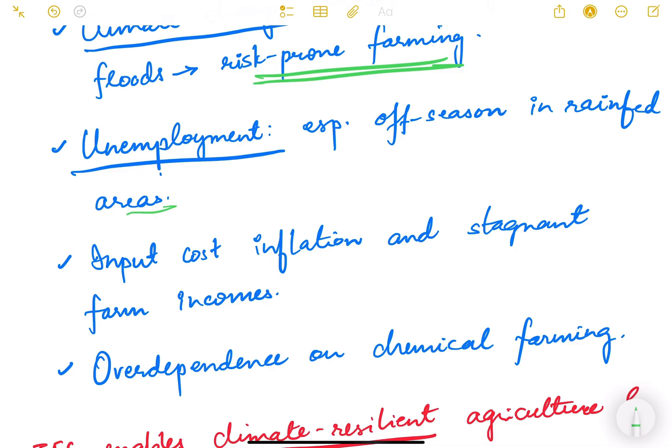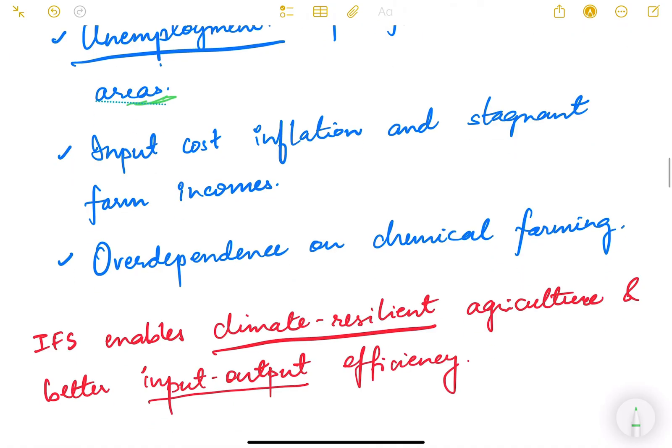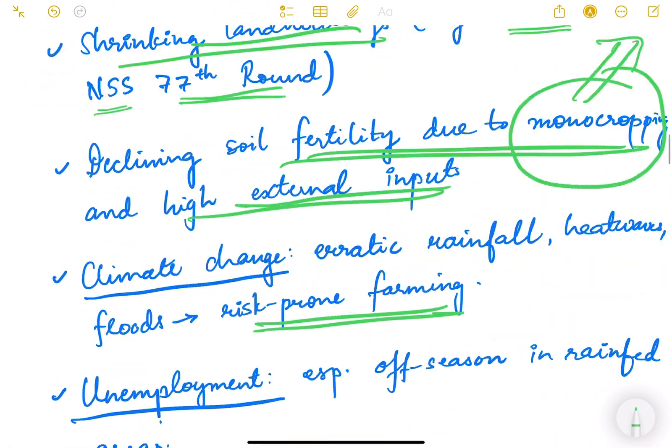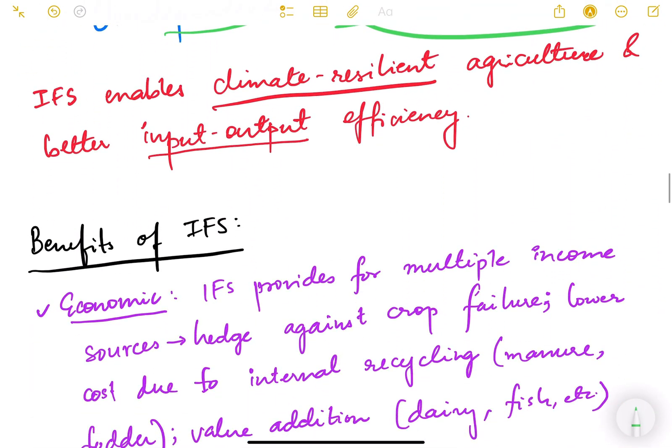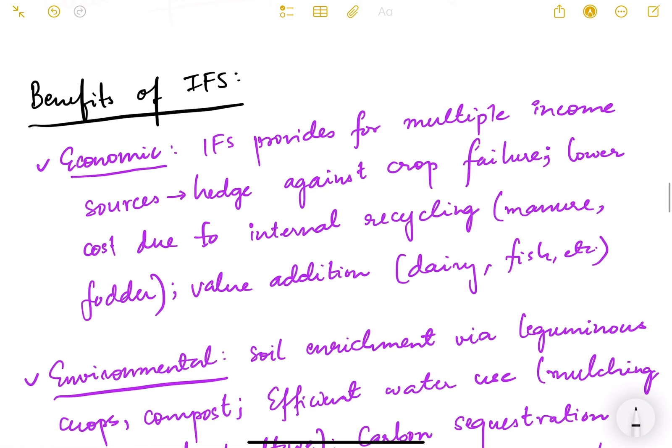Unemployment, especially off-season in rainfed areas. When there is no monsoon season, farmers in most rainfed areas will not do anything. If they have integrated farming, they can be engaged in one activity or the other. Input cost inflation, stagnant farm incomes, overdependence on chemical farming. IFS enables climate-resilient agriculture and better input-output efficiency.